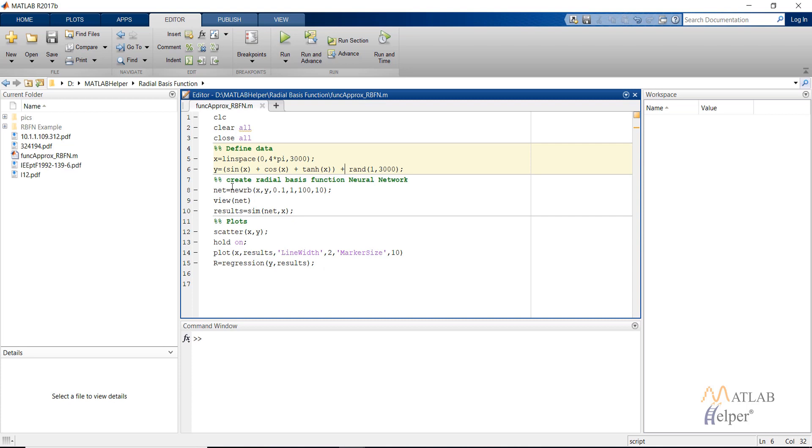Then we make use of the command newRB. This command creates the radial basis function which uses the OLS learning algorithm that we have already discussed. The parameters that it takes are the input vector, the target vector, the final goal or the performance that you require.